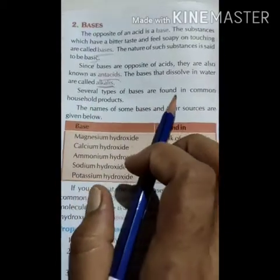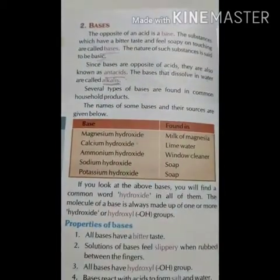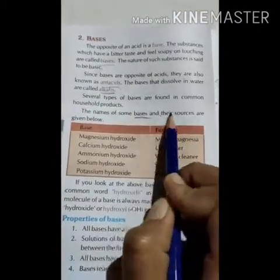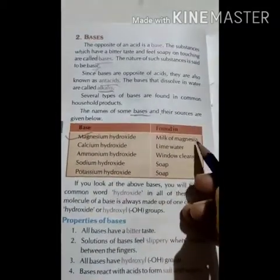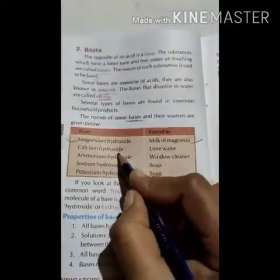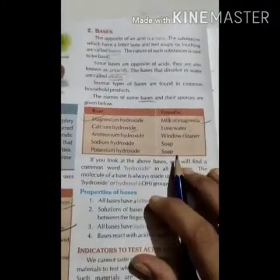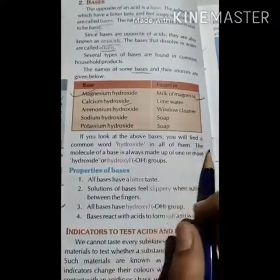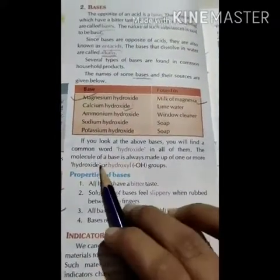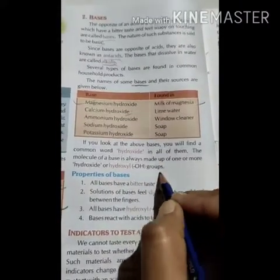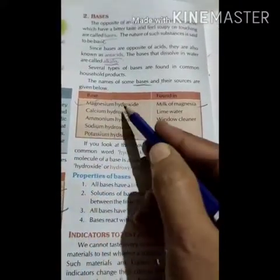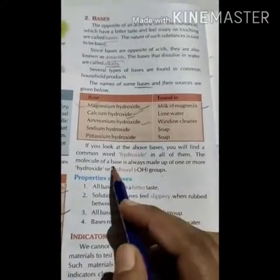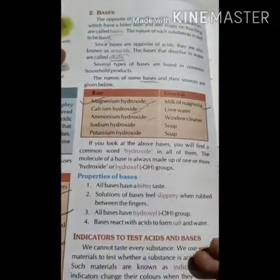Several types of bases are found in common household products, such as magnesium hydroxide, calcium hydroxide and lime. If you look at these bases, you will find a common word: hydroxide. The molecule of a base is always made up of one or more hydroxyl (OH⁻) groups.